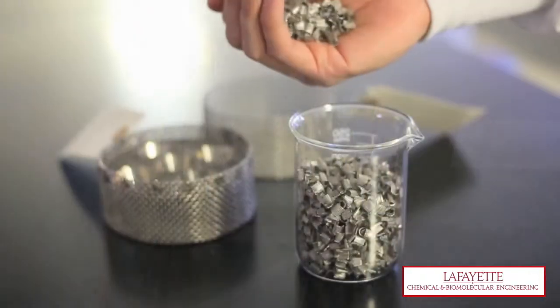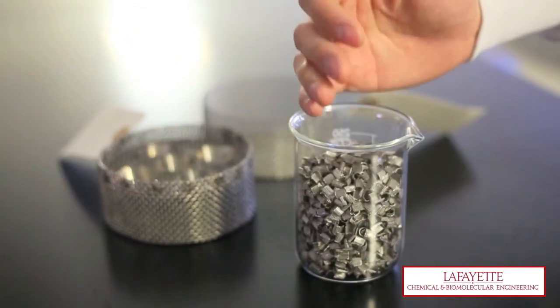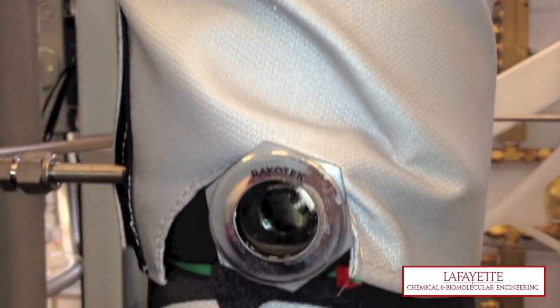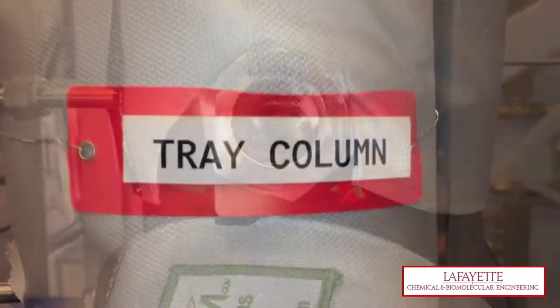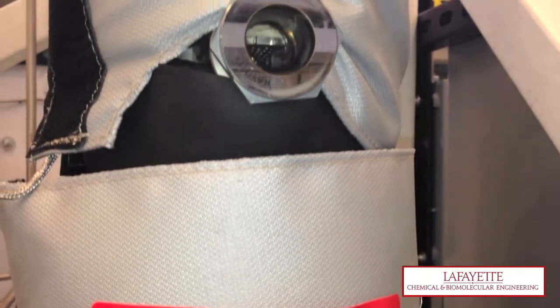The packed column is filled with small pieces of metal, or packing. The tray column contains 18 trays. The purpose of the packing and the trays is to increase the surface area over which downcoming liquid and upcoming vapor contact each other, thus improving separation.